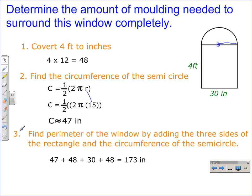To finish this problem up, we need to find the perimeter of the window by adding the three sides of the rectangle and the circumference of the semi-circle.